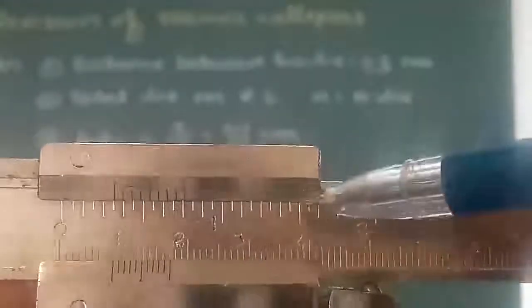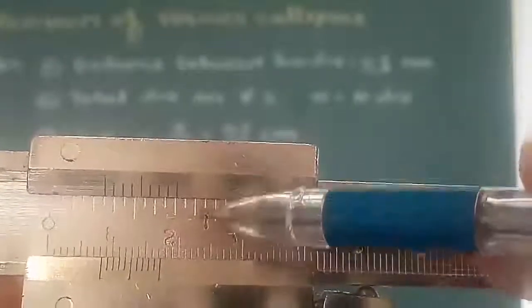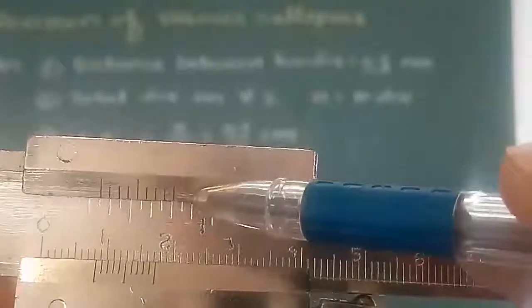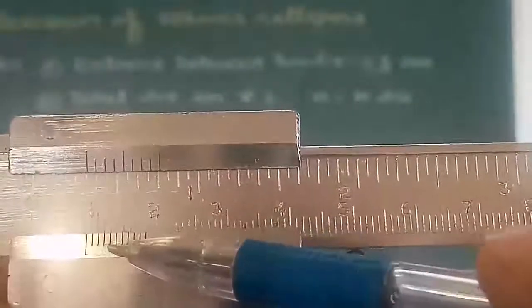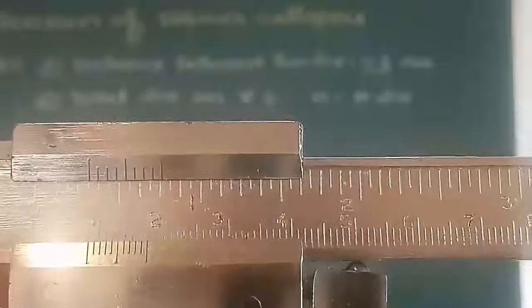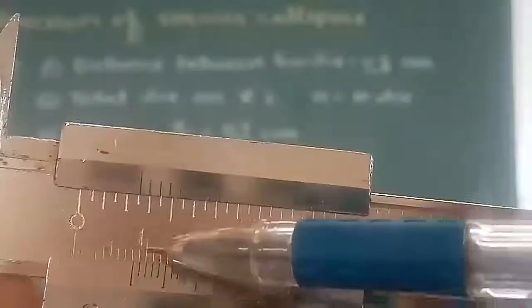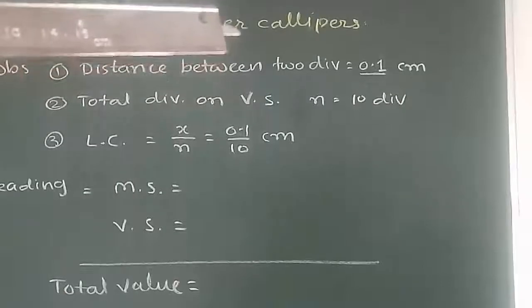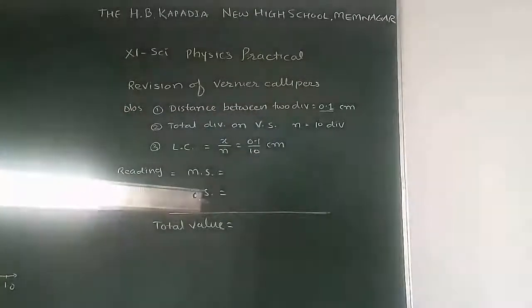This scale is called the main scale for centimeter, and this scale is called the main scale for inches. These divisions are known as Vernier divisions for inches, and these divisions are known as the Vernier scale for centimeter. We will observe the reading from the centimeter scale only. From 0 to 1, there are 10 divisions, so the distance between two divisions on the main scale is equal to 0.1 centimeter.